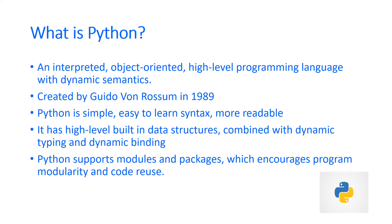Why do we choose Python? What is Python? Python is an interpreted, object-oriented, high-level programming language with dynamic semantics. It was created by Guido van Rossum in 1989. At that time, the language was not very popular. In other programming languages we use curly braces, but in Python there are indentations that replace the curly braces.